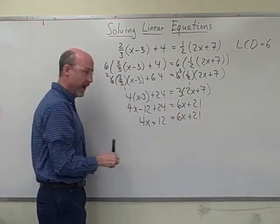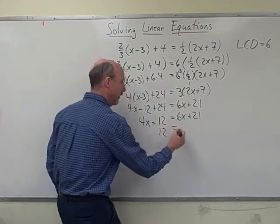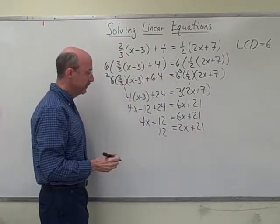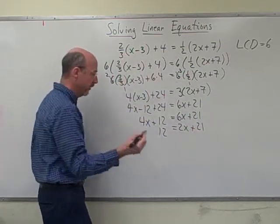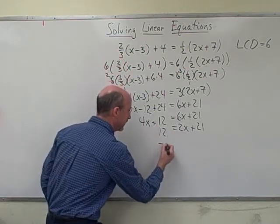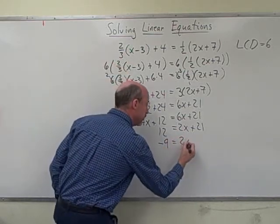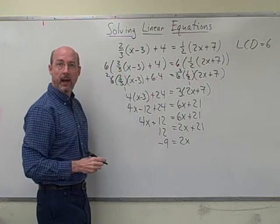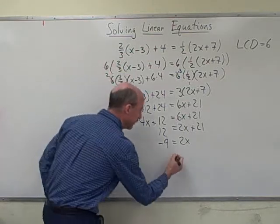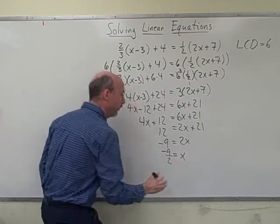Now we can subtract 4x from both sides to get all the x's on one side. So there will be no x's here, and we'll have 2x plus 21 on the right. Subtract 21 from both sides, and we're going to get 12 minus 21. So negative 9 equals 2x, and finally, we can isolate the x by dividing both sides by 2. So we get x equals negative 9 over 2.